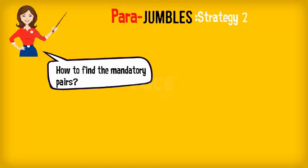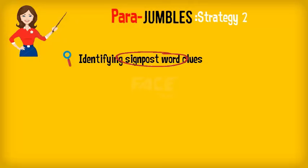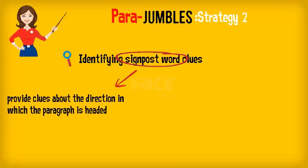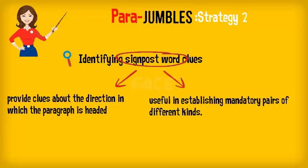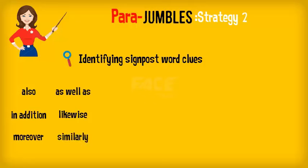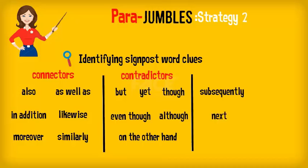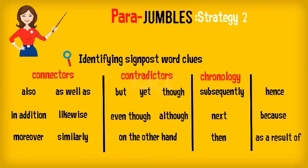Such mandatory pairs can also be identified using signpost words, which provide clues about the direction in which the paragraph is headed. Words like 'also,' 'as well as,' 'in addition,' 'likewise,' 'moreover,' 'similarly,' etc., connect sentences of the same topical direction. Words like 'but,' 'yet,' 'though,' 'even though,' 'although,' 'on the other hand,' etc., connect sentences of the opposite topical direction. Words like 'subsequently,' 'next,' 'then,' etc., connect sentences in chronological order. Words like 'hence,' 'because,' 'as a result of,' etc., connect sentences using the cause and effect relationship.